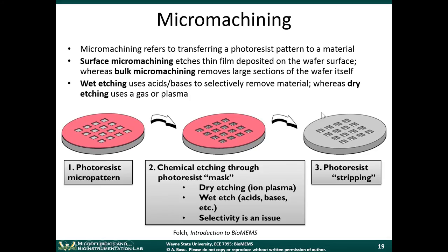I also discussed how we would strip the photoresist. One step is developing the photoresist — removing only the areas exposed by light. Then after etching, you remove all the photoresist; that's called photoresist stripping. You use a different chemical that removes all photoresist regardless of whether it has been exposed or not. Wet etching uses acids and bases to selectively remove material. You can also use dry etching, where a gas or a plasma is used to selectively remove material.